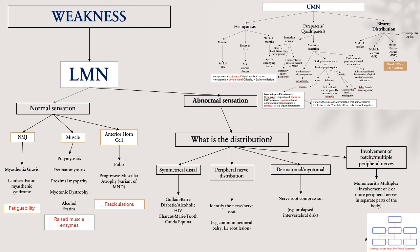Remember that in cauda equina syndrome you will find bladder and bowel dysfunction — it is a neurosurgical emergency. If the weakness and sensation are not symmetrical, or if it's unilateral, or only affecting one part of the hands, arms, or legs, it will point towards a peripheral nerve or nerve root involvement.